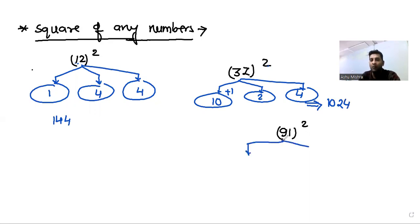Again, you have to do 91 square. We apply the concept. 1 square is 1. 9 into 1 is 9, 9 double is 18. Write 8, carry 1.